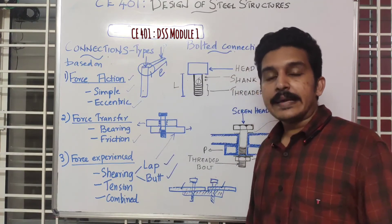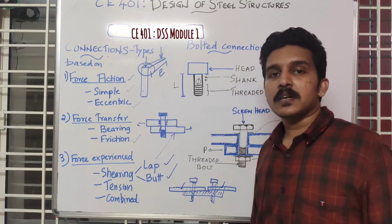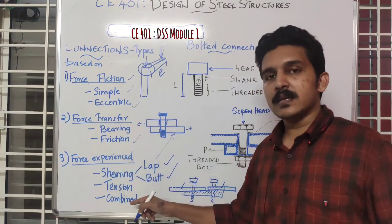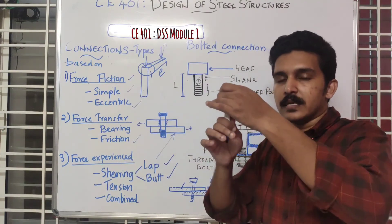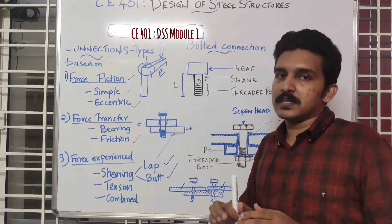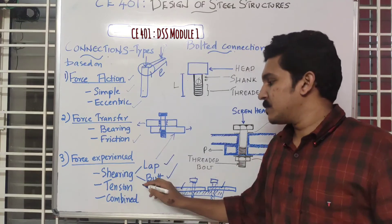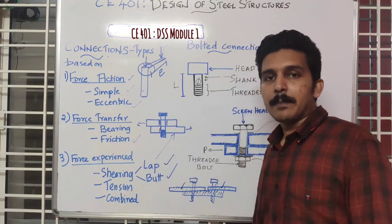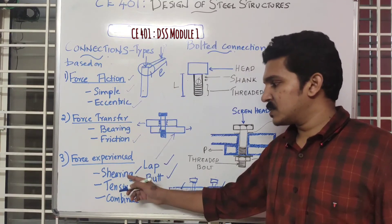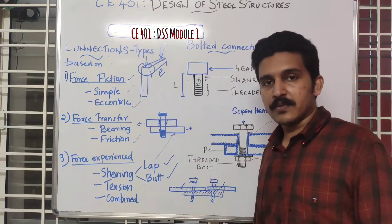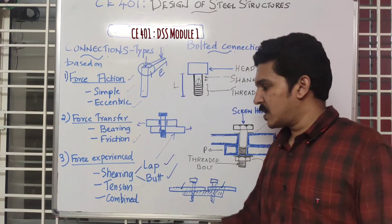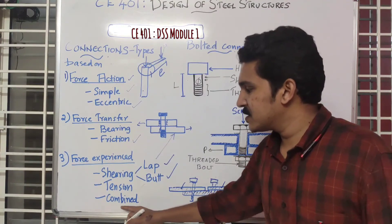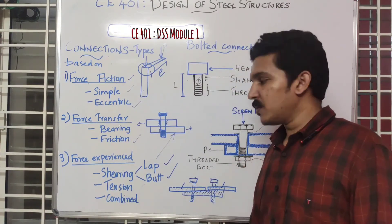A tension connection experiences a pulling force — an example is a hanger connection. The last type is a combined connection, where there is both shearing and tension effect. This is not very common, and we will not be studying combined connections for now. We will concentrate on lap joints and butt joints.